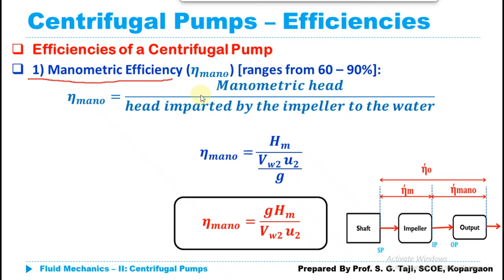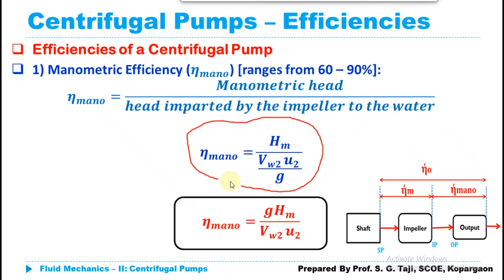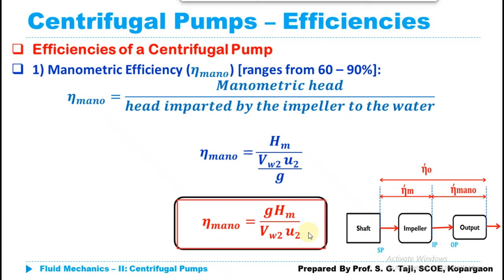Manometric efficiency is given by the ratio of manometric head to the head imparted by the impeller to the water. The manometric head is the head against which the centrifugal pump is working. The head imparted by the impeller is given by the expression Vw2 × u2 divided by g, and the manometric head Hm equals (Vw2 × u2 / g) minus losses. So manometric efficiency equals Hm divided by (Vw2 × u2 / g), which simplifies to: manometric efficiency = g × Hm / (Vw2 × u2).